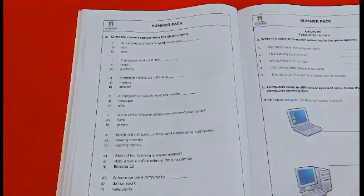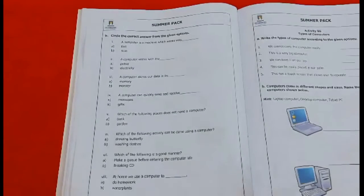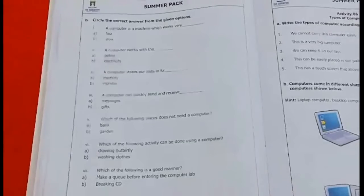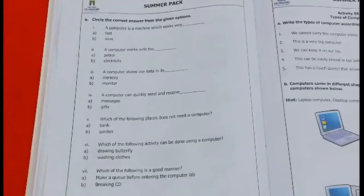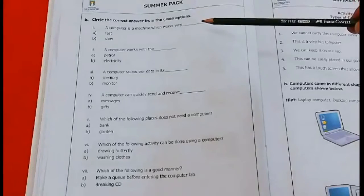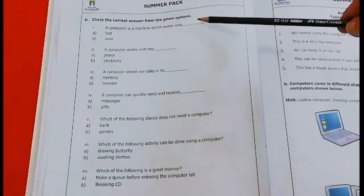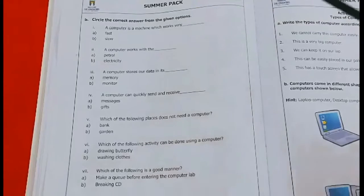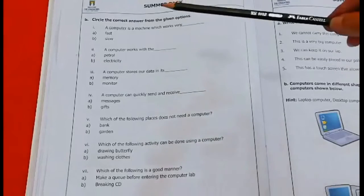First, we have to read out the statement. And if the correct option is correct, we have to circle it. So first statement, we have a computer is a machine which works very dash. We have two options given: A, fast.